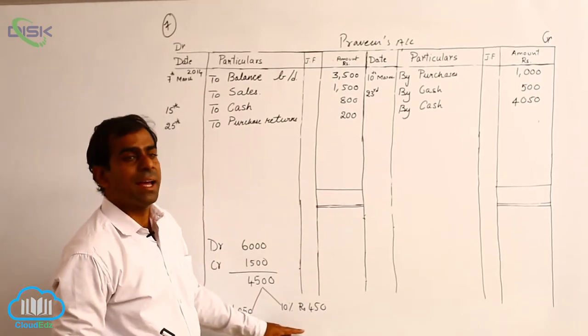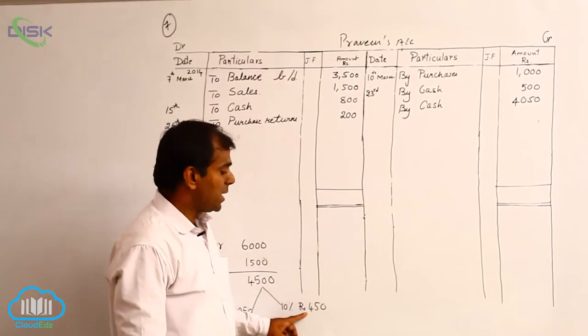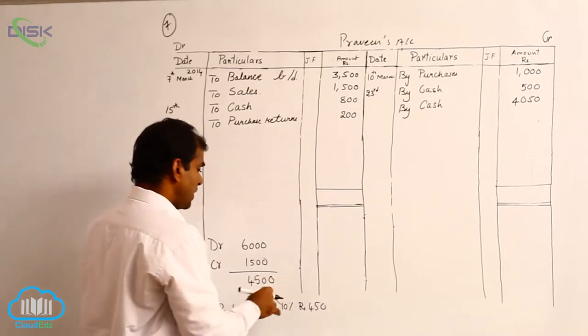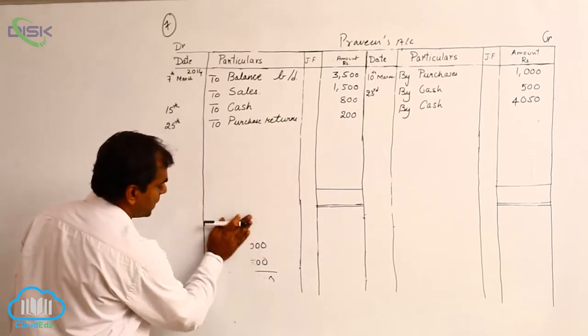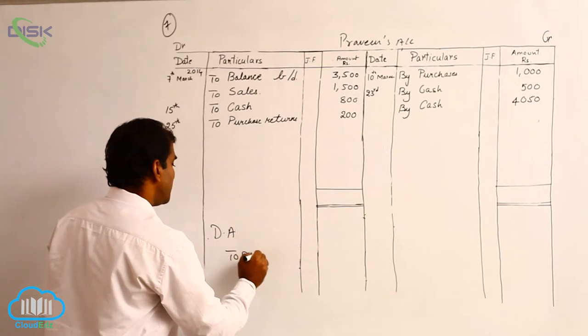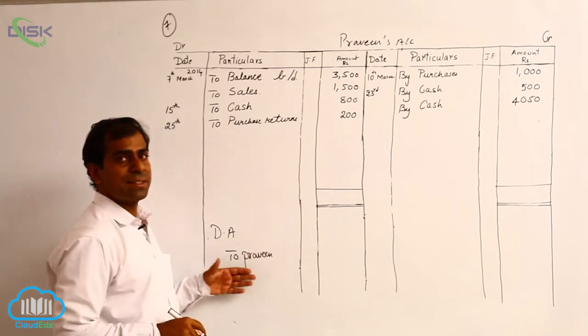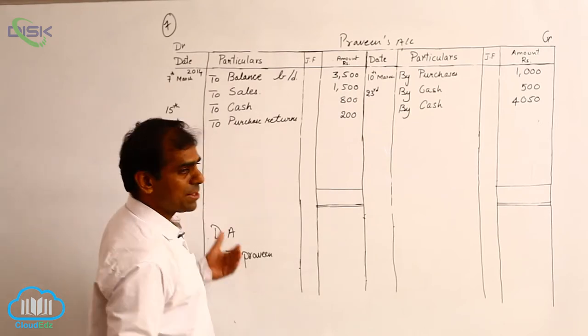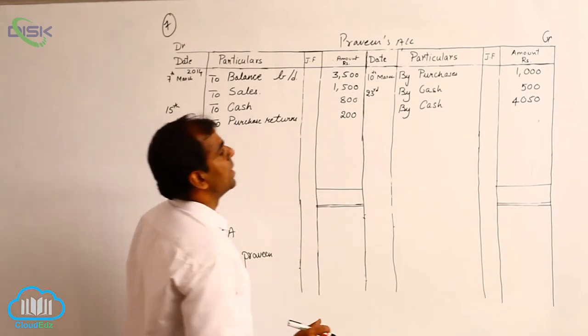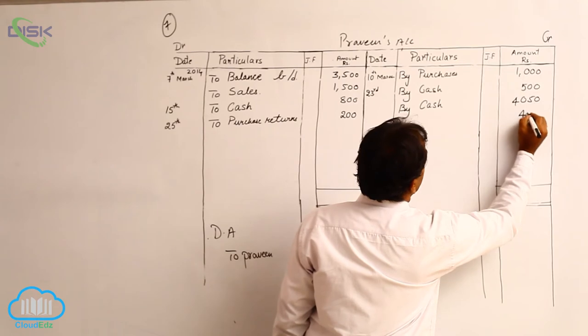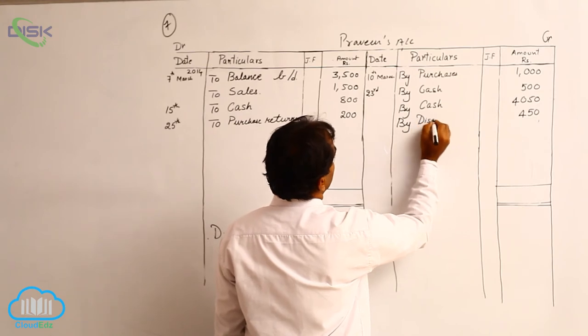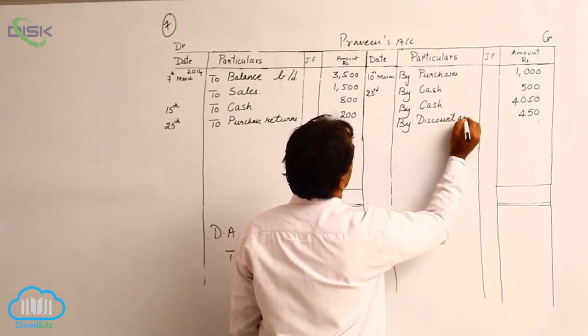We are allowing him a discount of 450. That is, we are giving him a concession which is a loss for us. This loss of 450, if we have to journalize, should be discount allowed to Praveen's account as if he has given us that cash. When we are imagining as if he has given us this cash, we have to credit his account because he becomes the giver. So we are crediting his account 450, the reason being discount allowed.